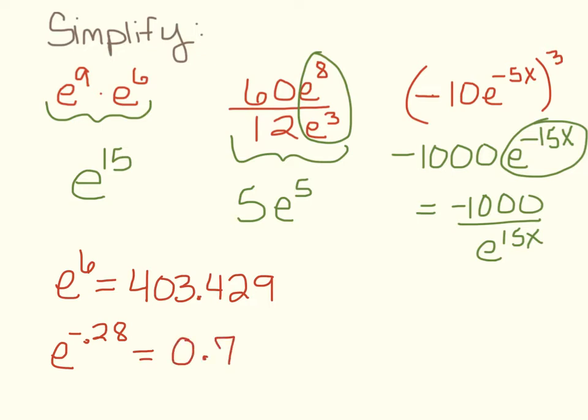And then you're going to write down 3 decimal places, 0.756, like that. Easy, easy.